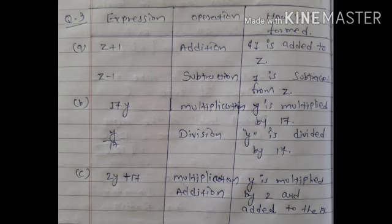B: 17Y. तो यहाँ पे 17 and Y के बीच में कोई sign नहीं दिख रही है. तो इस तरह का अगर हो तो आपको समझ लेना है यहाँ पे multiply है — 17 and Y के बीच में कोई sign नहीं है, तो हमें समझ लेना है कि इन दोनों के बीच में multiplication का rule है. अल्वेज इसी तरह होगा. Y is multiplied by 17. Y by 17 — तो यहाँ पे division यूज हुआ है. Y is divided by 17. That means denominator में 17 होगा.